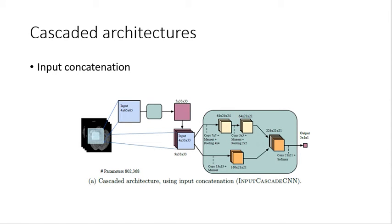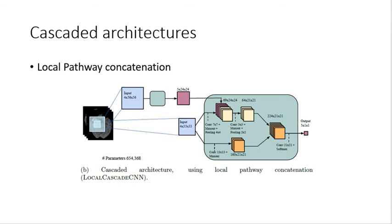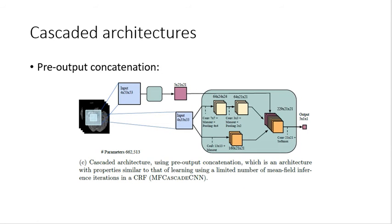Let's discuss a different architecture which is cascaded architecture. In this cascaded architecture, there are different types: input concatenation, local pathway concatenation, and pre-output concatenation.